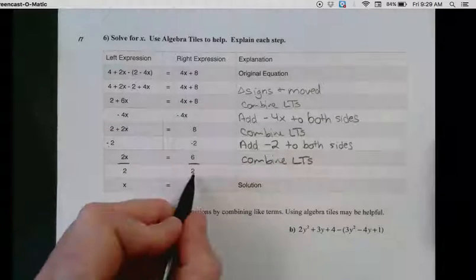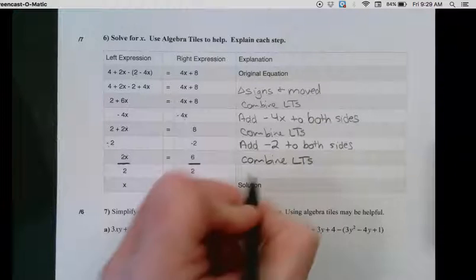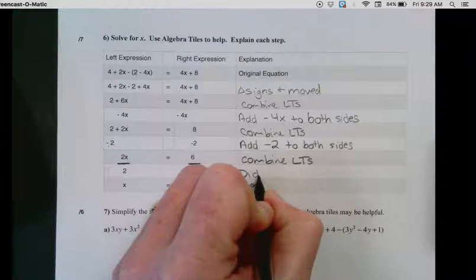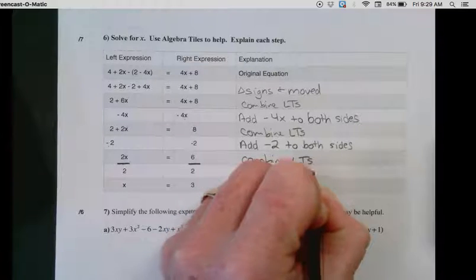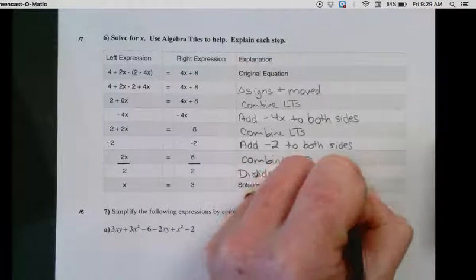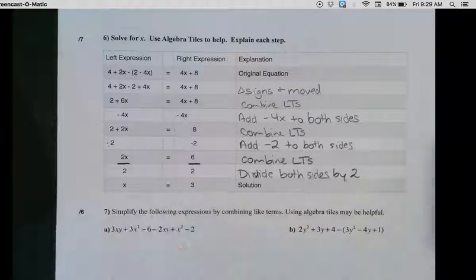Then we performed an operation. What did we do? We divided both sides by 2. Oops, can't spell. Divide both sides by 2. And we are left with x equals 3, which is a solution.